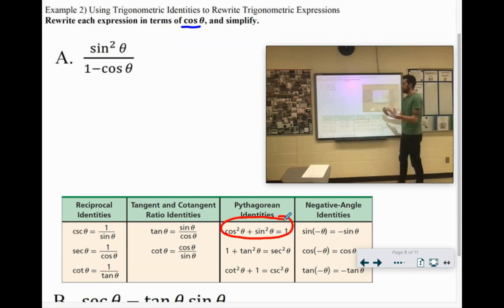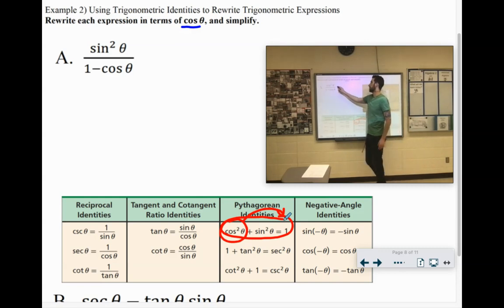So if I have sine squared of theta, and I want it to be cosine squared of theta, think of how we would move cosine squared of theta to the other side. We would subtract it. So sine squared of theta would equal one minus cosine squared of theta. One minus cosine squared of theta. And we have one minus cosine of theta in the denominator.